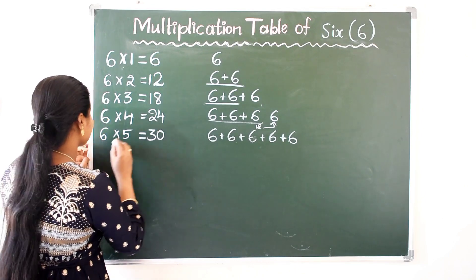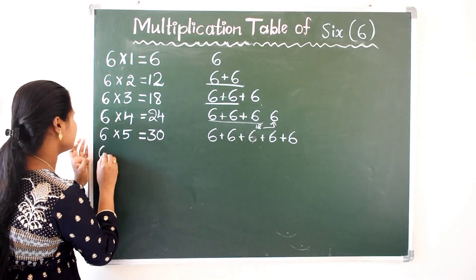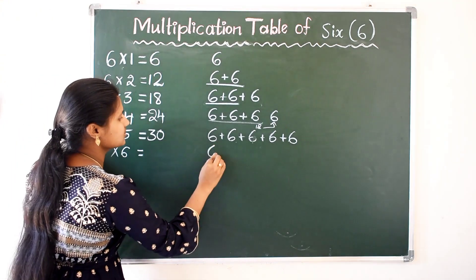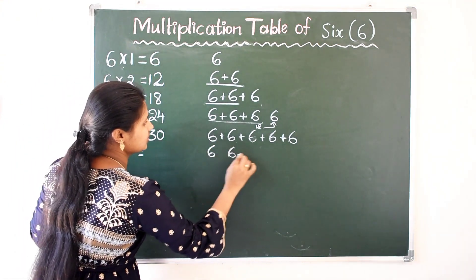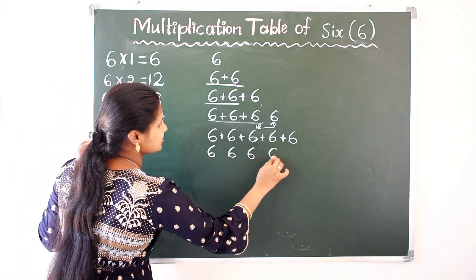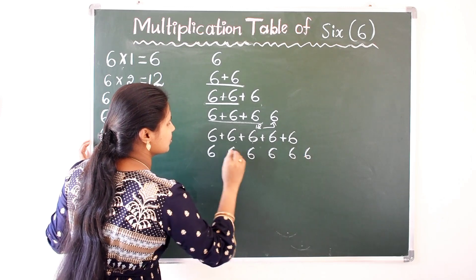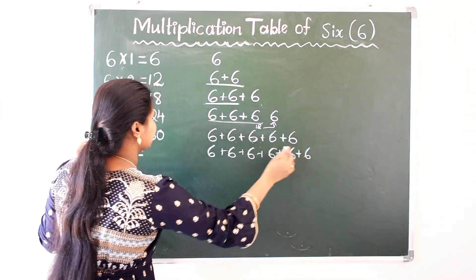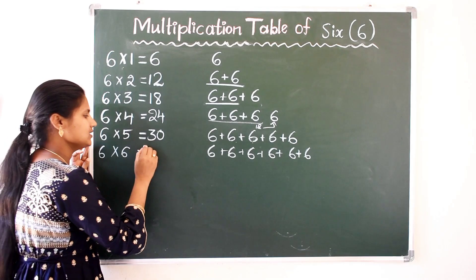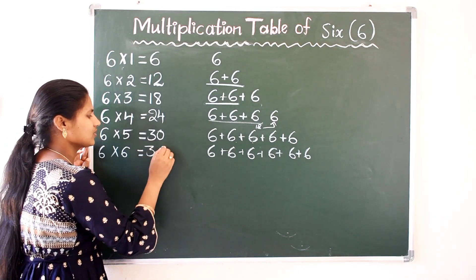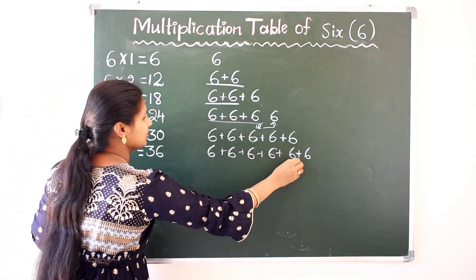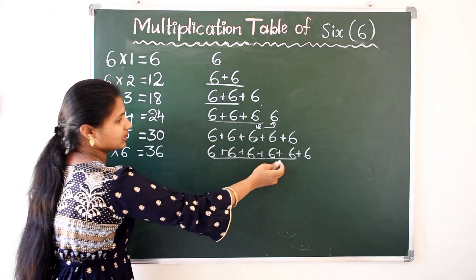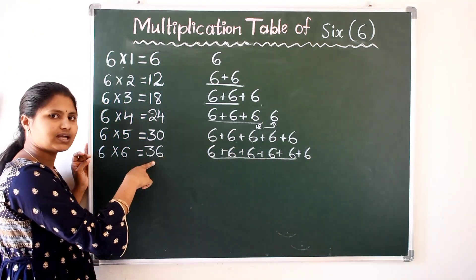Next, 6 6s are. I am writing here — 6 six times. So if we add 6 six times, we will get total 36. Up to here 30 — 6 5 times are 30, 30 plus 1 more 6 is 36.